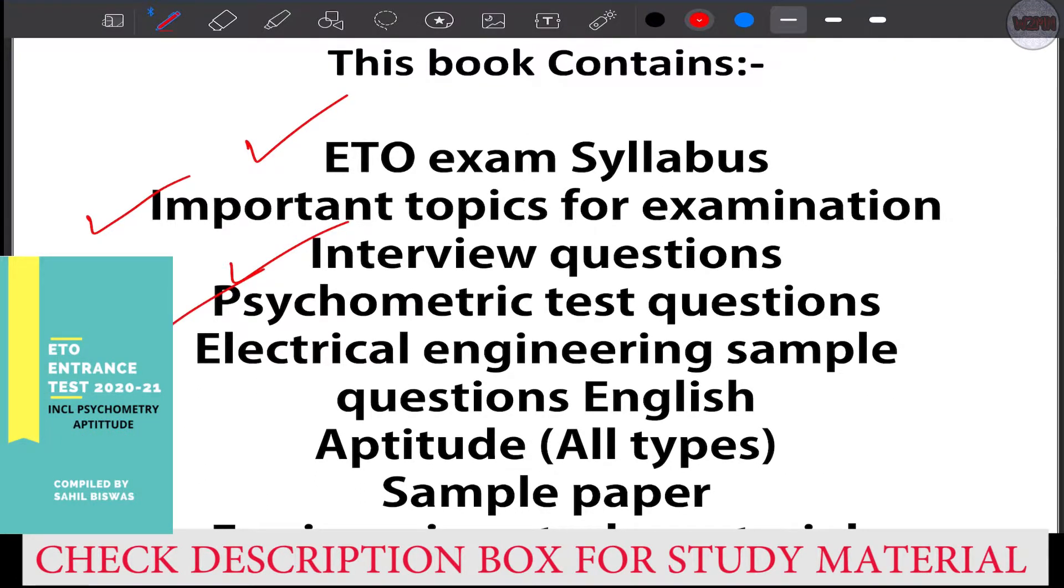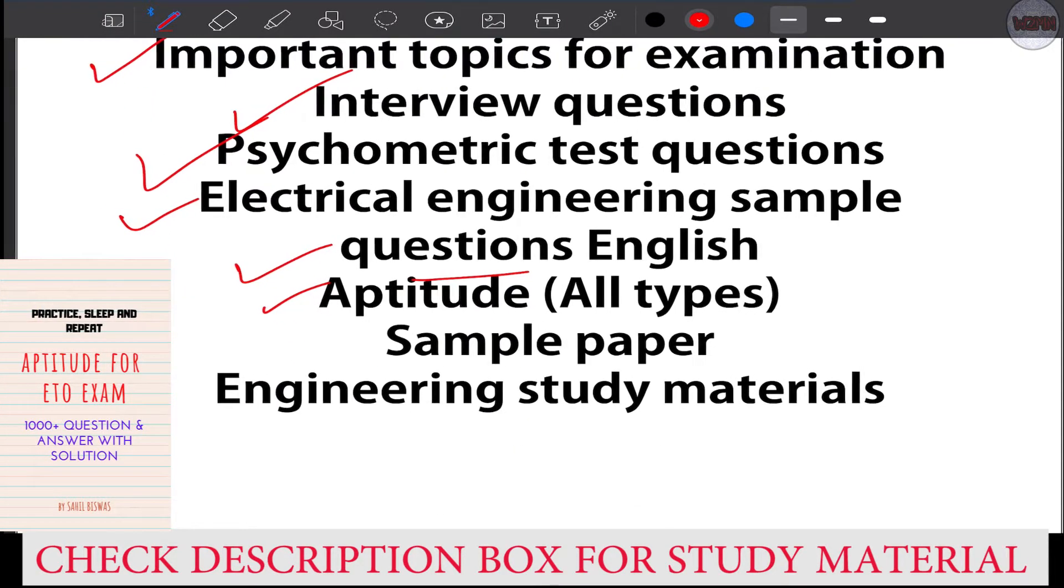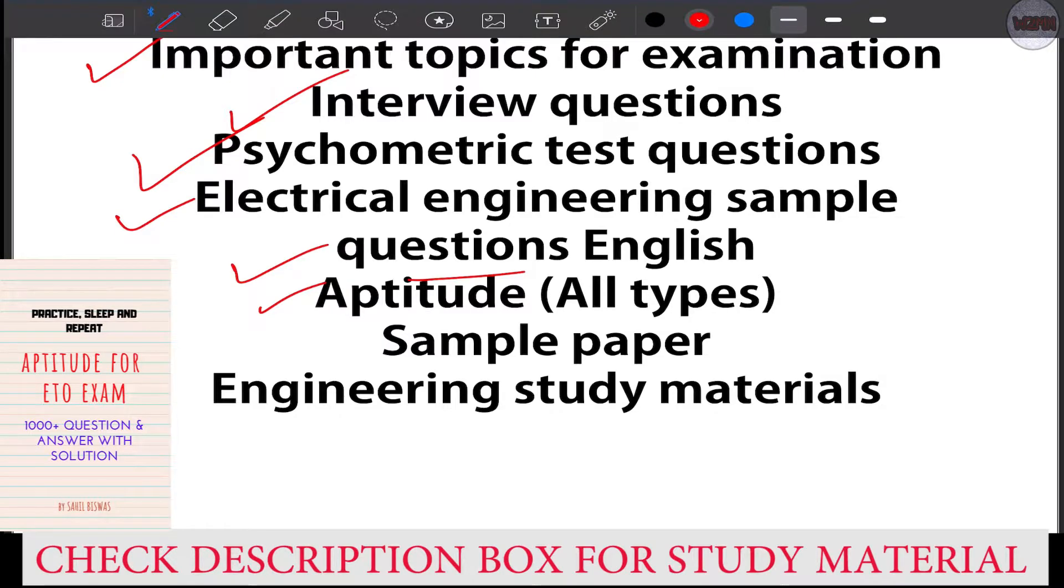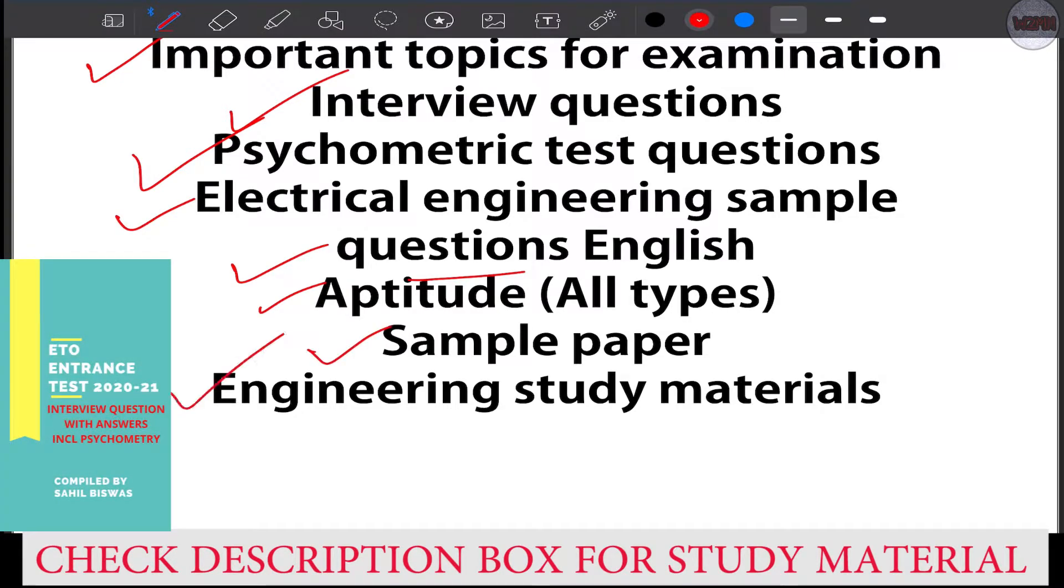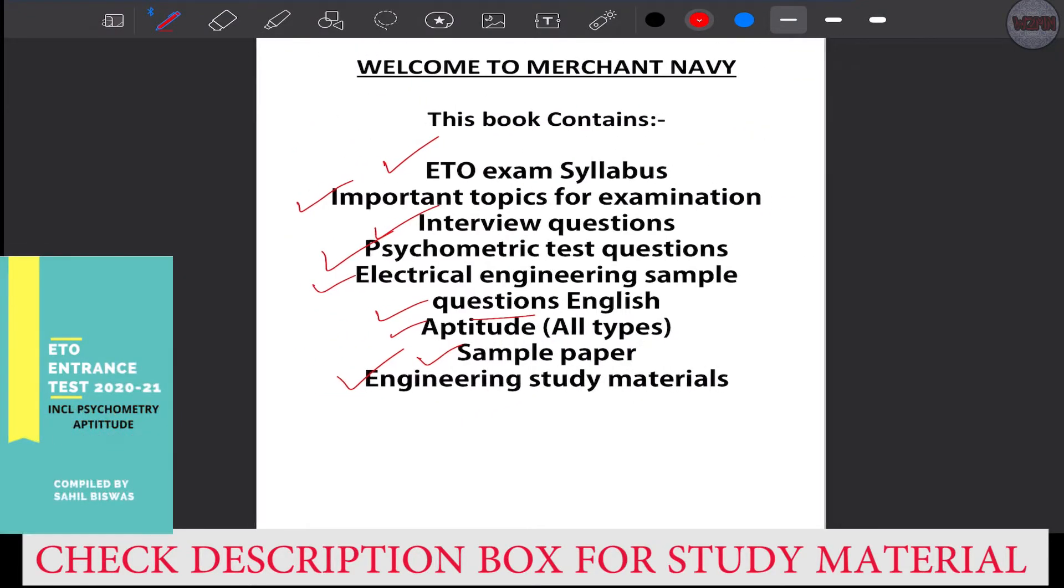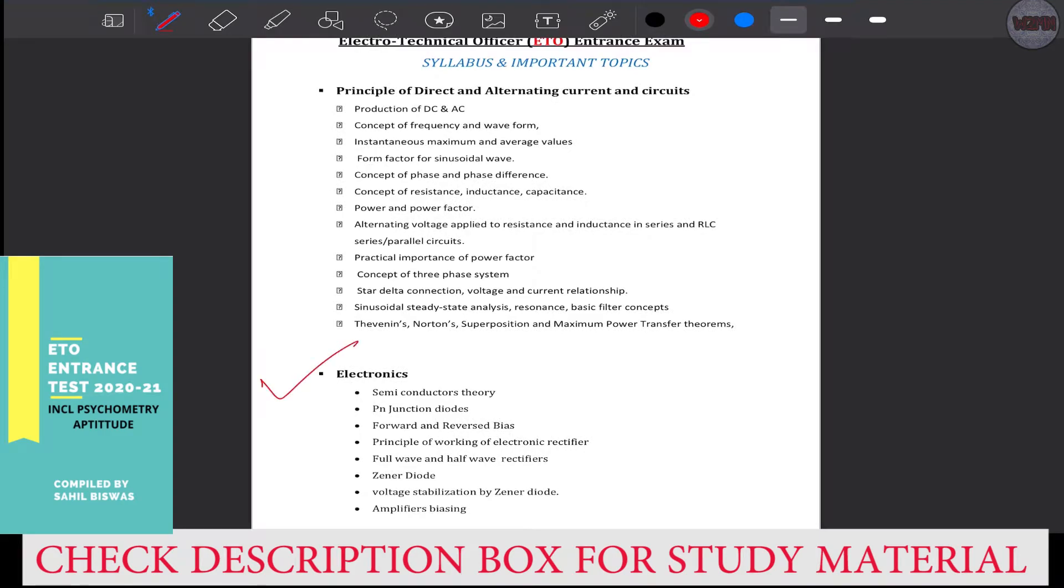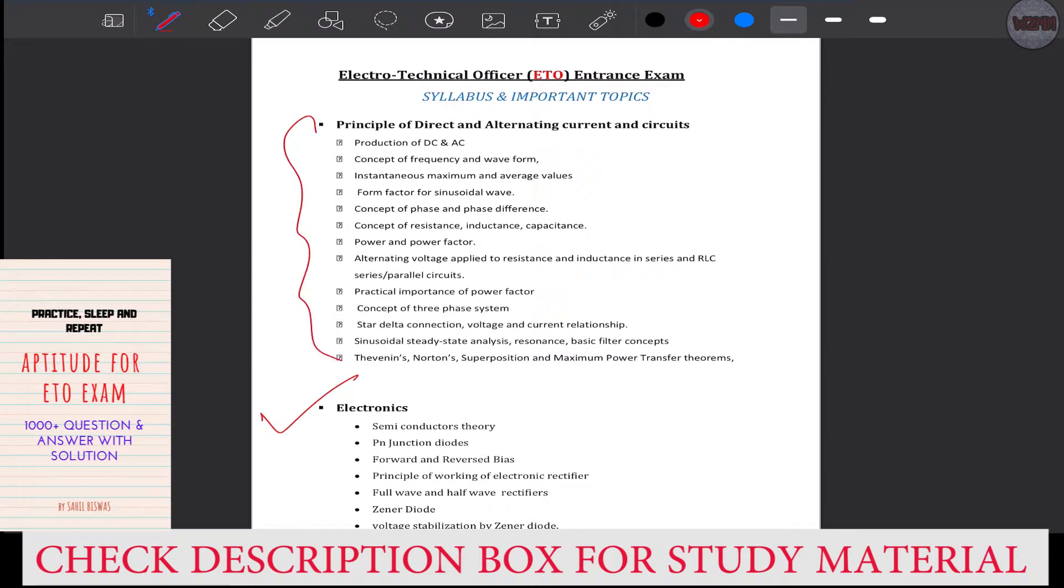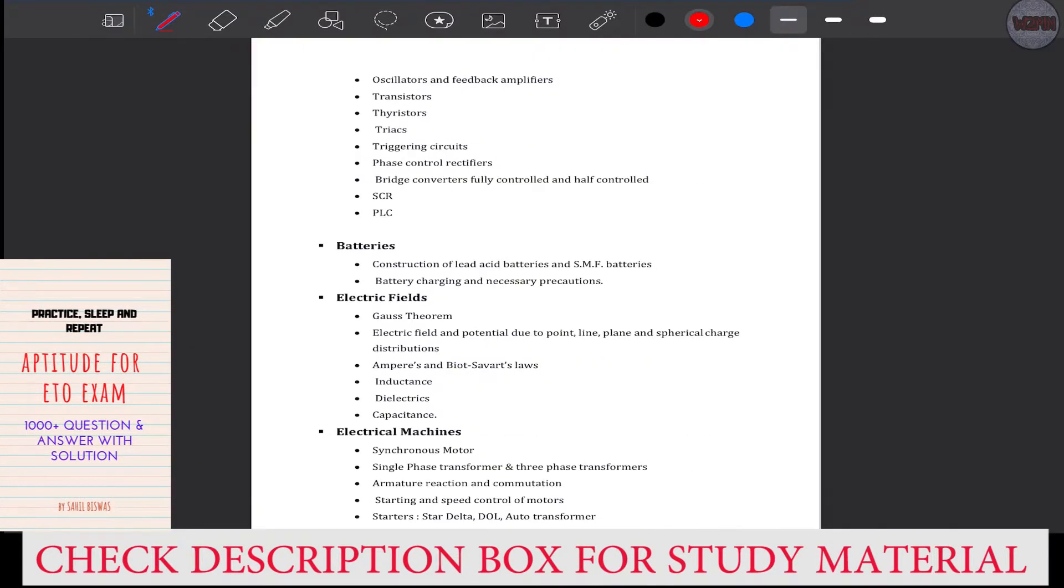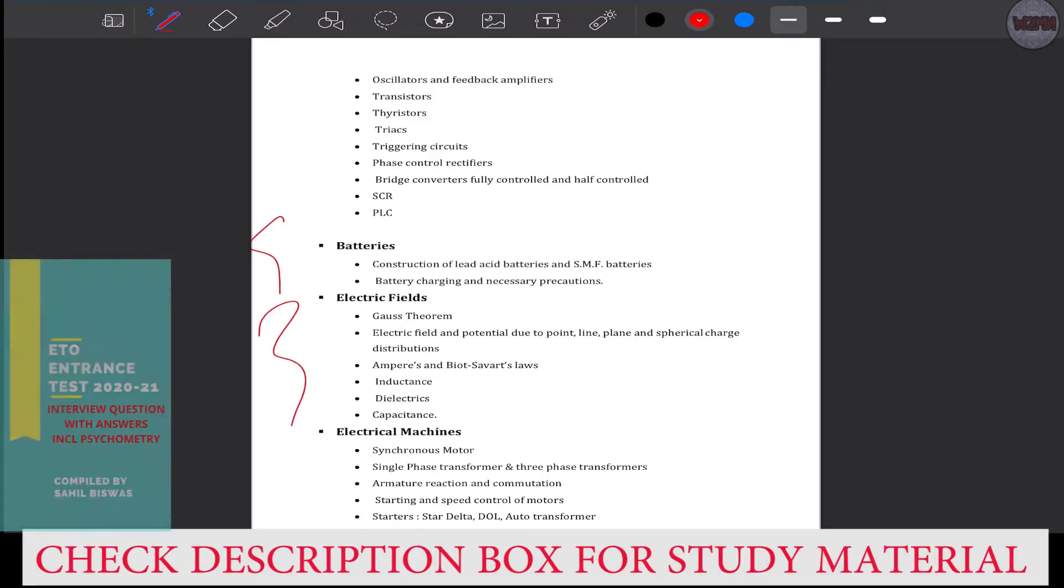So study material I will show you: the ETO entrance book which has all things - syllabus, important interview questions, psychometry. You're getting electrical engineering things, aptitude also from this material. This material will be sufficient, but if you want more aptitude practice, you can go for that aptitude set also.